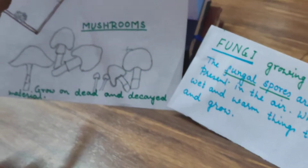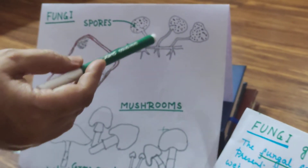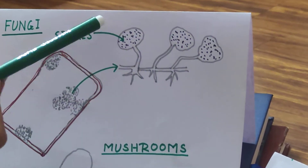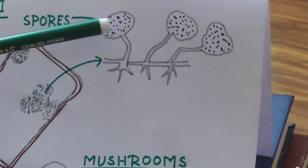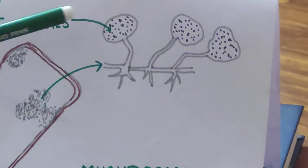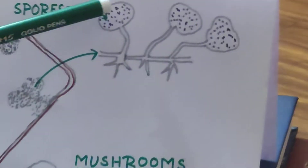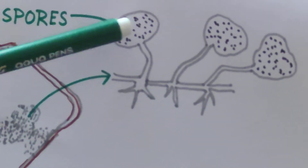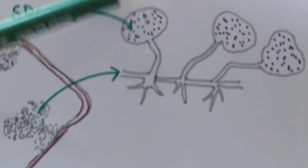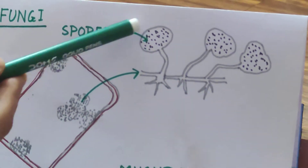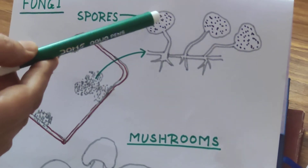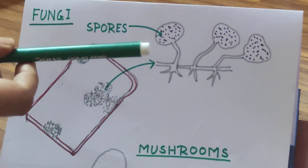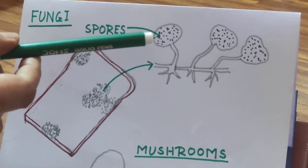Now if I put this under the microscope, what I am going to see is this type of round structures on a stalk — round structures which are there. These round structures are actually spore sacs. Spores are very small microscopic structures which cannot be seen and are very light, so they are carried by the air. When these spore sacs become mature, they rupture, and the spores come out, and when they fall on some wet surface, they grow.